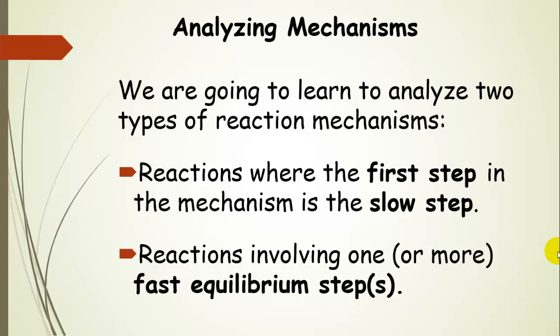So the rate limiting step is first. And then another type is reactions that involve one or more fast equilibrium steps. We'll talk about what fast equilibrium steps are in the next presentation before we write the rate law for a reaction that involves this type of step.